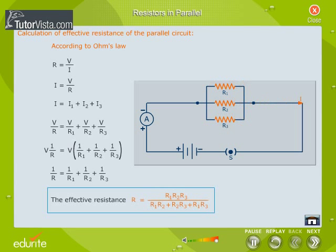Therefore, the effective resistance R is equal to V into 1 by R1 plus V into 1 by R2 plus V into 1 by R3.